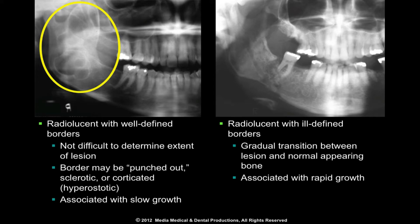In most instances, a well-defined border indicates relatively slow growth. An ill-defined border presents the picture of a gradual transition from lesion to normal appearing bone, making it difficult to determine the extent of the lesion. In most cases, an ill-defined border indicates relatively rapid growth.